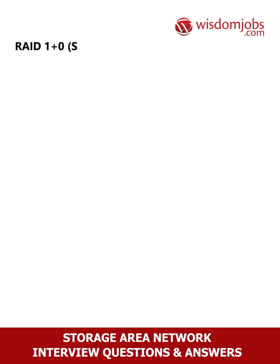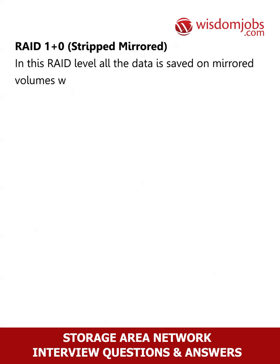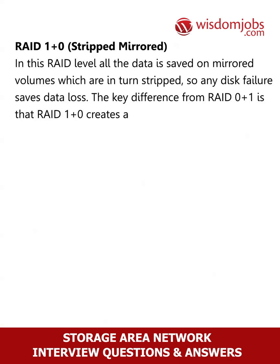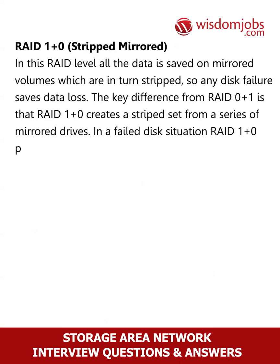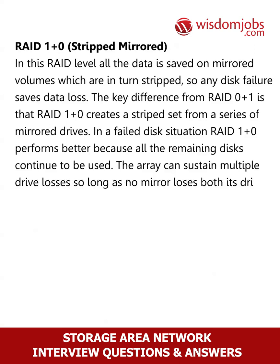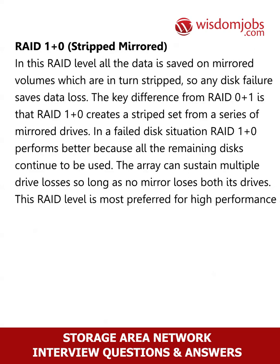RAID 1+0 (striped mirrored): all data is saved on mirrored volumes which are in turn striped, so any disk failure saves data loss. The key difference from RAID 0+1 is that RAID 1+0 creates a stripe set from a series of mirrored drives. In a failed disk situation, RAID 1+0 performs better because all the remaining disks continue to be used. The array can sustain multiple drive losses so long as no mirror loses both its drives. This RAID level is most preferred for high performance.